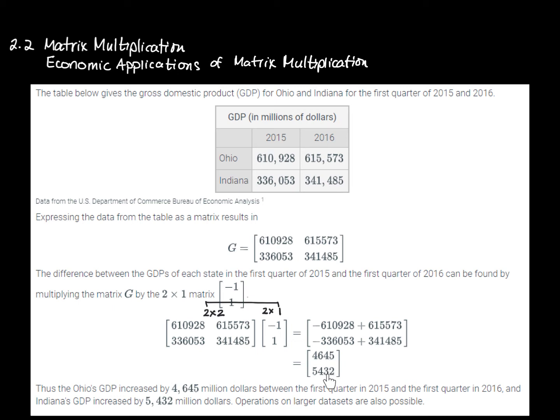If one of these numbers had turned out to be negative, we would say the gross domestic product had decreased. Now, why would you do that for a two by two matrix?